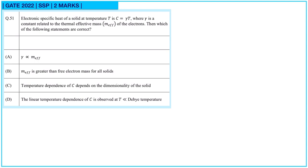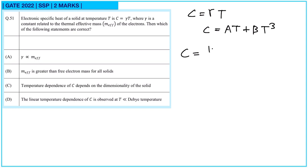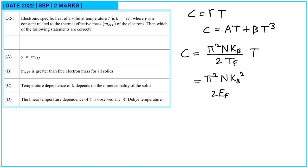Question number 51: the electronic specific heat of a solid at temperature T is C = gamma·T, where gamma is a constant related to the thermal effective mass of electrons. Which statements are correct? The formula for C gives gamma = pi^2 · N · k_B / (2·T_F) · T. Since E_F = k_B · T_F, we can write T_F = E_F / k_B, giving C = (pi^2 · N · k_B^2) / (2·E_F) · T.